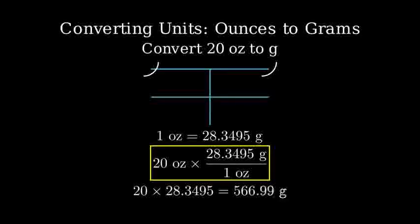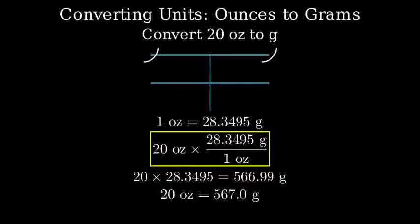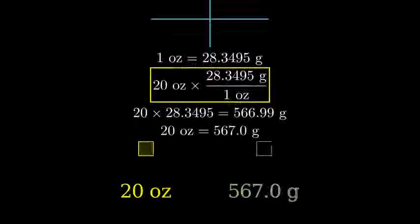Let's visualize this conversion. Here's what 20 ounces looks like on one side of the scale and the equivalent 567 grams on the other side. They balance perfectly because they represent the same weight, just measured in different units.